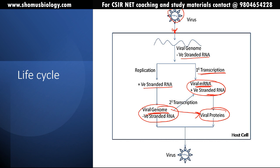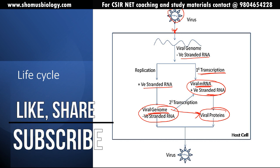Measles virus is a very highly contagious infection that targets children, though it may also spread in adults but very rarely. Generally, if a child gets vaccinated, this infection is easily preventable and the vaccine works really well against this virus. That's all about measles virus, measles disease, and the measles virus life cycle. If you like this video please hit the like button, share it with your friends, and subscribe to this channel.